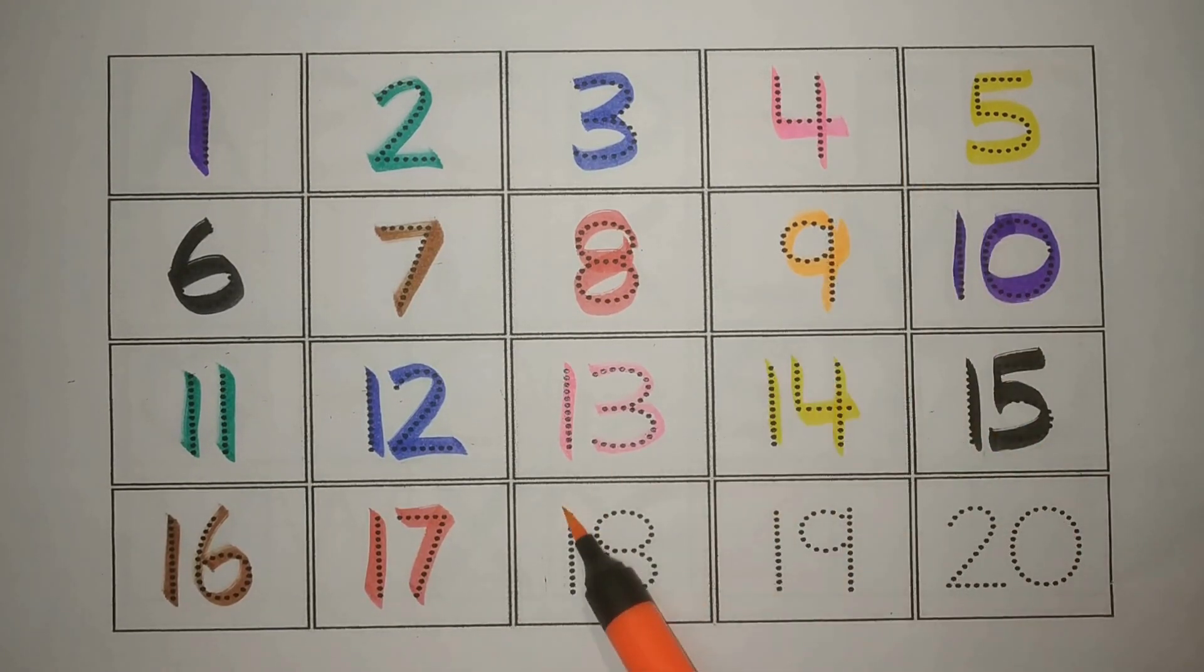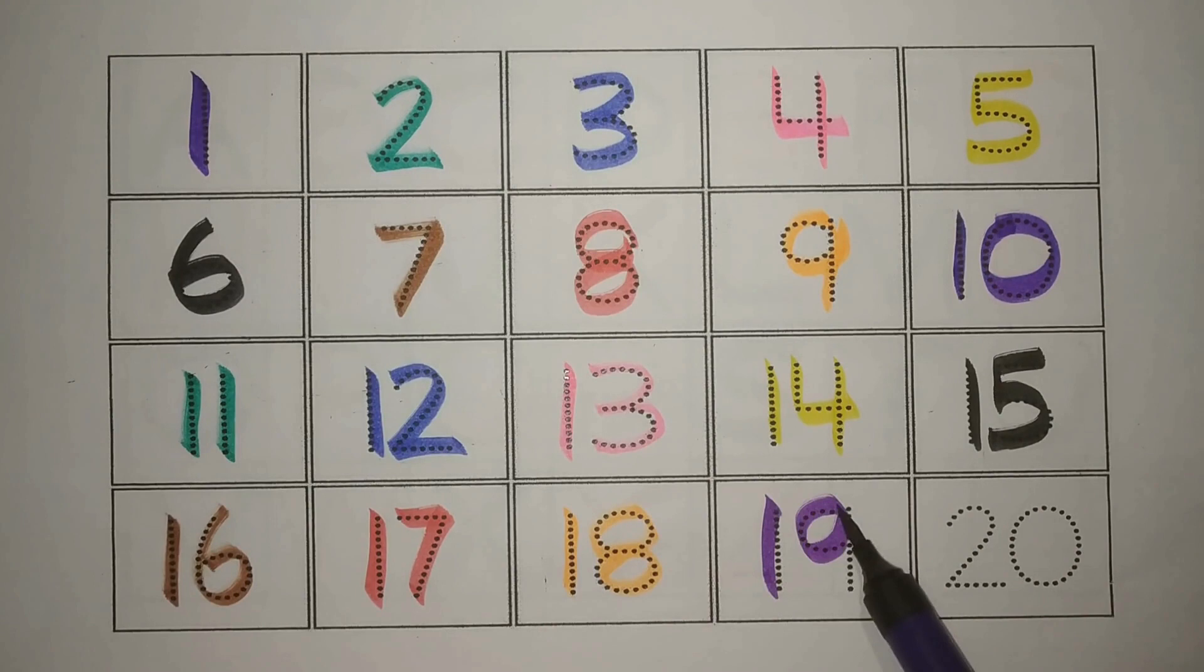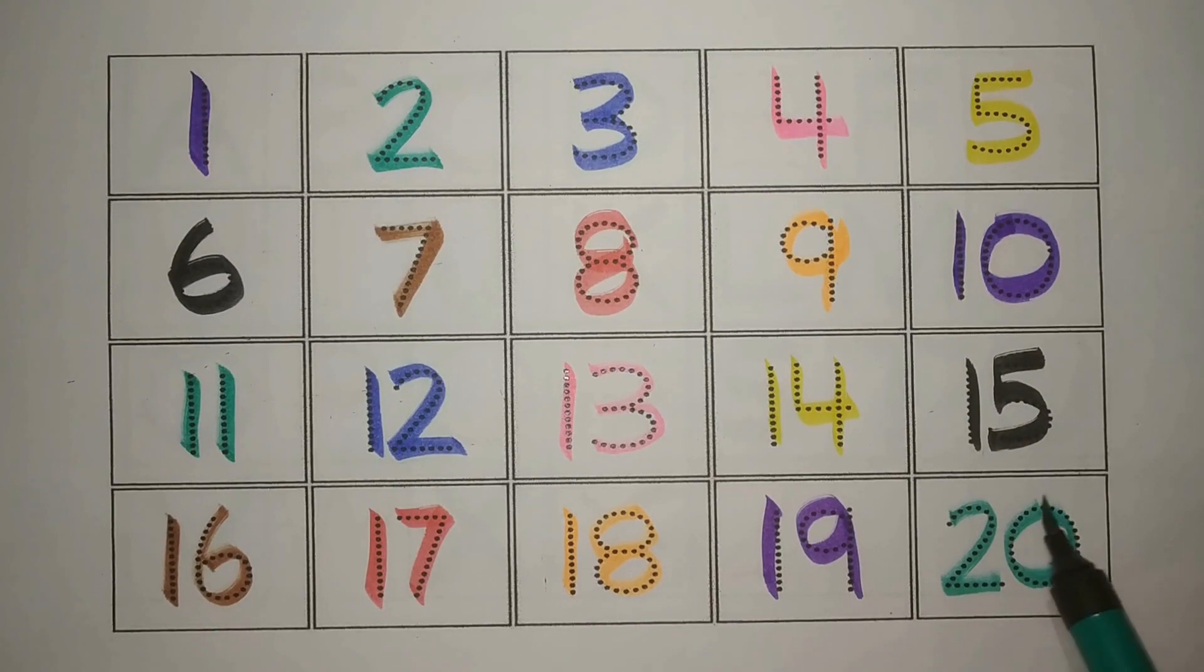Orange one eight eighteen, athara. Purple one nine nineteen, unnis. And green two zero twenty, bees.